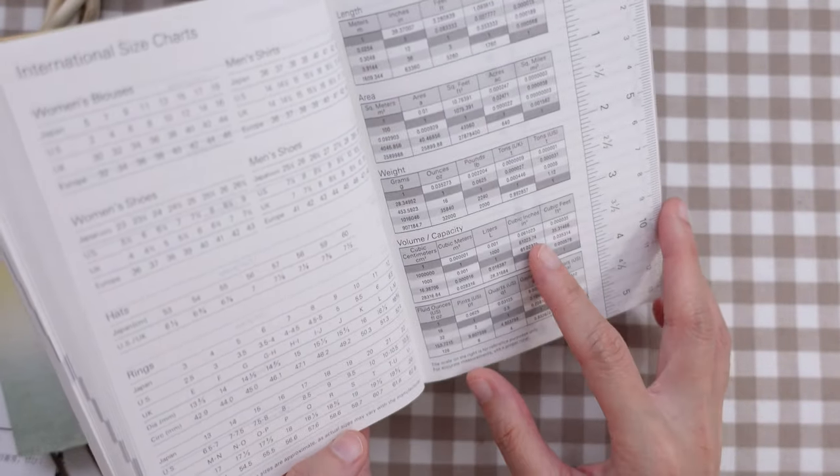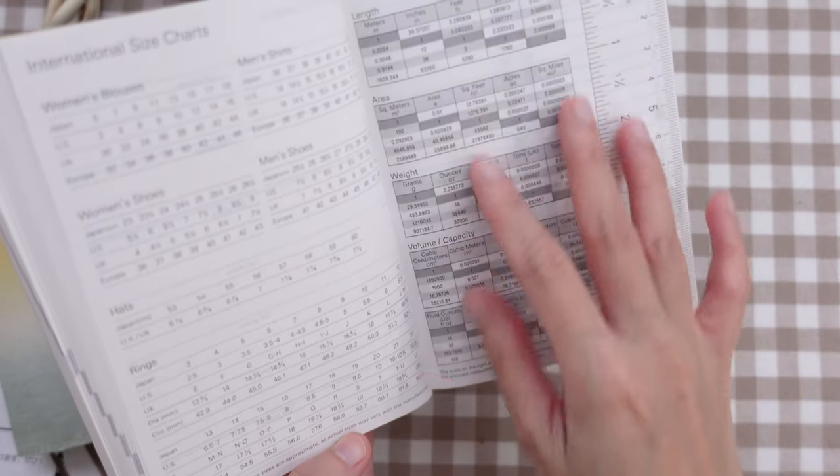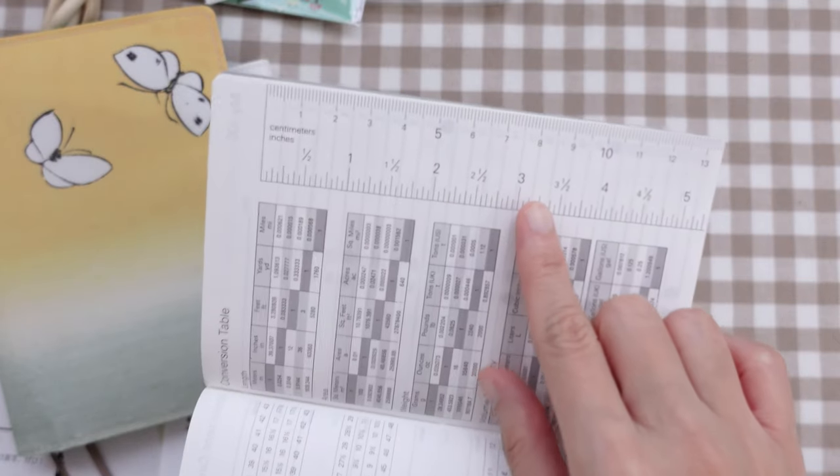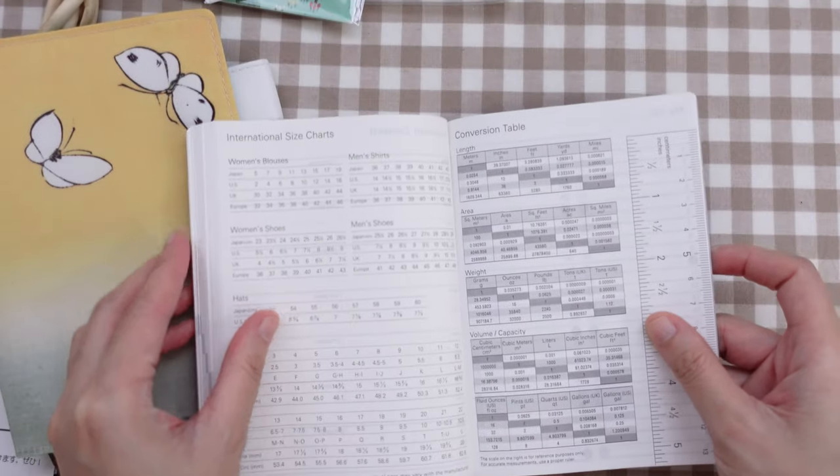So that's really nice. There's also a conversion table for length, area, weight, volume, and a mini ruler here, which is really nice. I love the attention to detail.